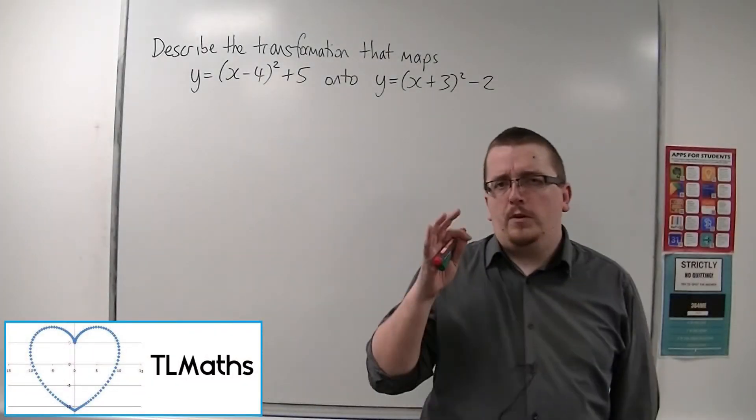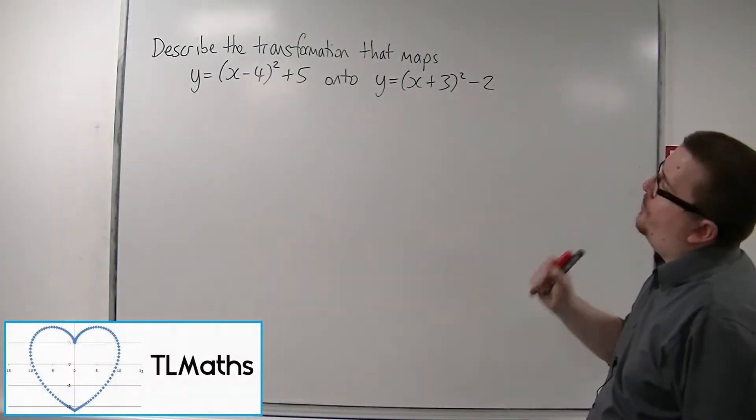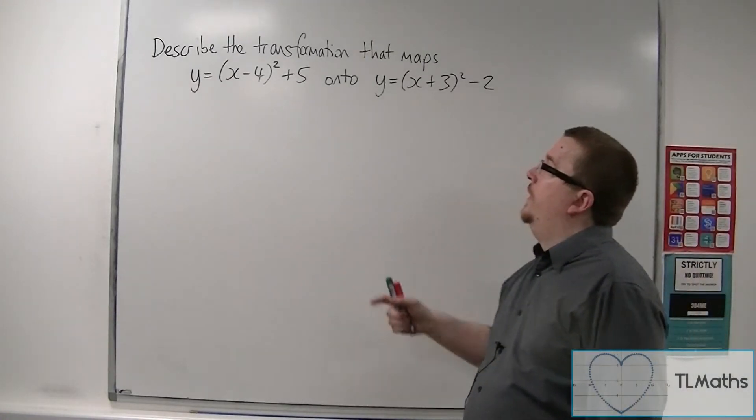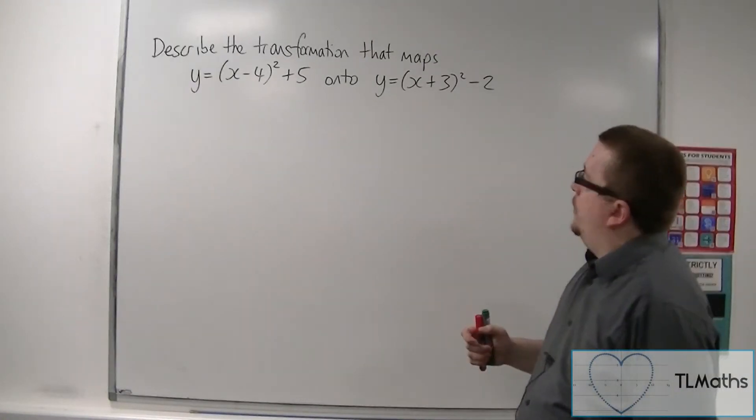So let's say that I was asked to describe the transformation that maps y equals x minus 4 squared plus 5 onto y equals x plus 3 squared minus 2.